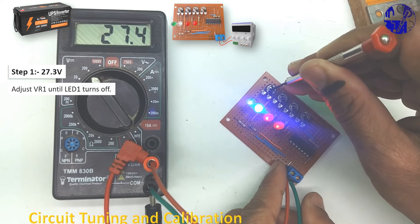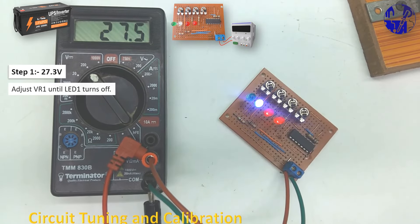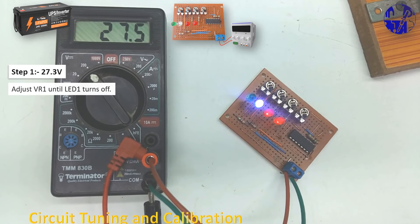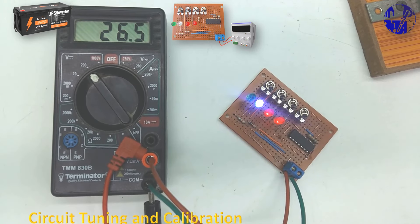When the battery voltage falls below 27 volts, LED one will turn off, signaling a voltage drop below 27.